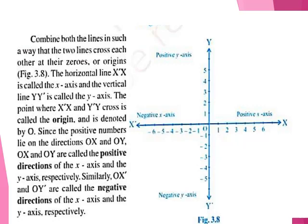Now combine both lines — one vertical and one horizontal — with both negative and positive integers written on them. You will get the figure shown in figure 3.8. Combine both lines so that they cross each other at their zeros, the origin. Y′Y has zero and X′X also has zero, so they intersect at point zero, which is known as the origin. The horizontal line XX′ is called the x-axis and the vertical line YY′ is called the y-axis. The point where both lines cross each other is called the origin, denoted by O.